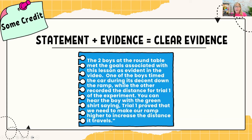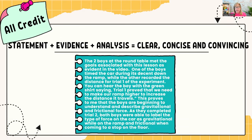Some of you are like, oh my gosh, Tracy, if I do an example like this and then I add something else to it, how could I fit everything in my paper? This is the point — you don't need 5,000 examples that are just statements. You need several really good ones that have a statement plus evidence plus analysis, to be clear, concise, and convincing.